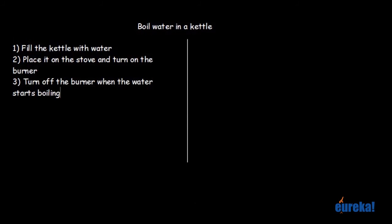Again, these three steps will not work for the computer. Mainly because 'fill the kettle with water' does not make sense to a computer — fill up could mean 100% to the brim, 98%, 90%, or 50%. When talking to a computer, you need to specify exactly how much water to fill. So the first step needs to be broken down. Also, for 'turn off the burner when the water starts boiling,' you need to define what boiling means — in this case, we say turn off the burner when the water hits 100 degrees Celsius.